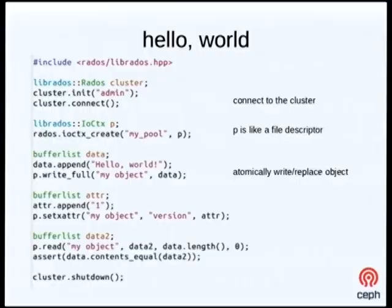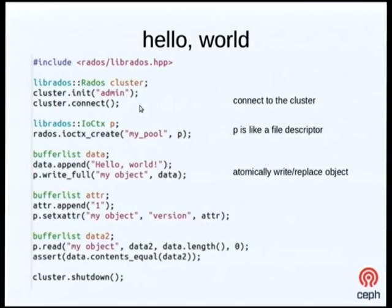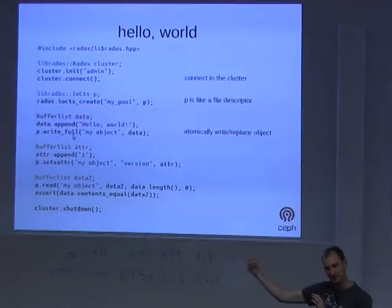Getting down to the nitty-gritty — here's a simple hello world program in the C++ interface. You include the header file, create a cluster handle that says which RADOS cluster you're going to talk to, indicate what user you'll authenticate as, and call the connect method. Behind the scenes this looks at the configuration file, goes out, authenticates, discovers the topology of the cluster, and comes back. Then you create an IO context — essentially like a file handle associated with a particular pool — and use that to do actual IO operations. We create a buffer, put 'hello world' in it, call the write function to write to an object called 'myObject.' It'll get applied to all the replicas and we get an acknowledgement back when it's safe. We can then set an attribute on the object indicating a particular version.